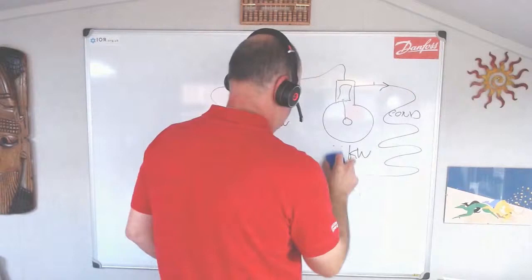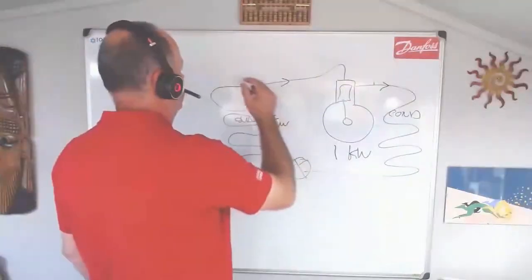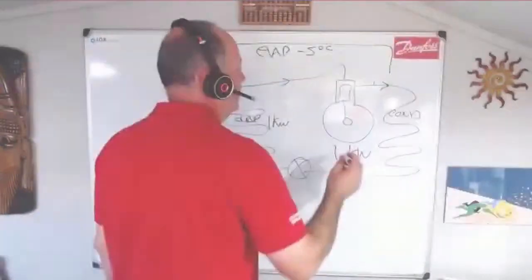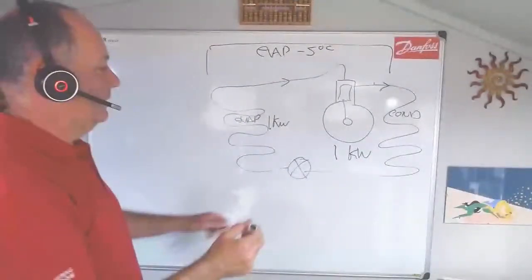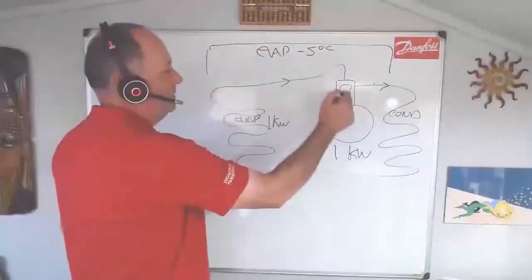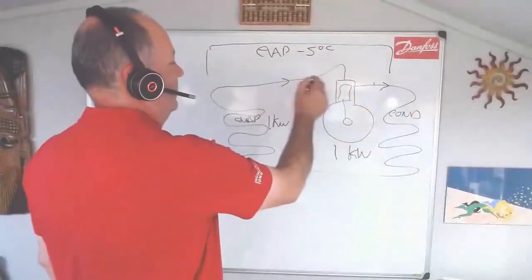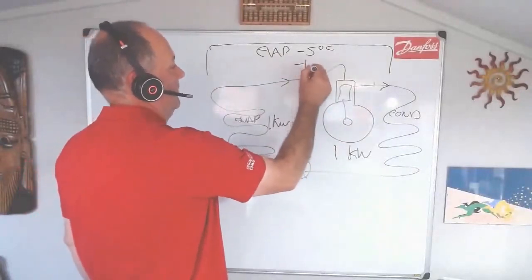So we've got one kilowatt, one kilowatt, and that system is designed to evaporate at, let's say, minus five. All of a sudden, if you've got a bigger compressor, instead of evaporating at minus five, because that's sucking more on the suction, we might evaporate at minus ten.